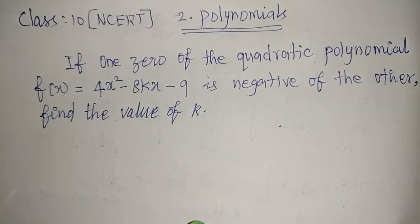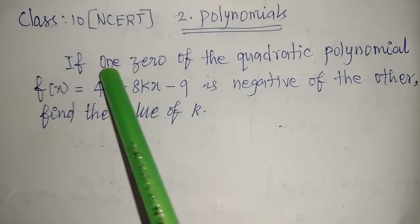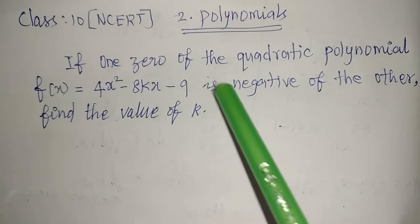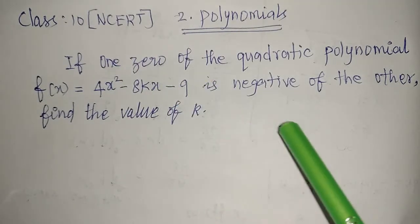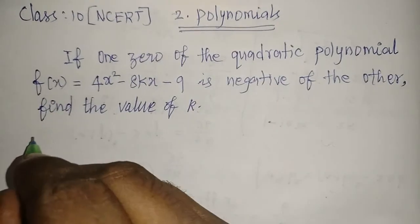One is alpha, another one is beta. Here, if you take one zero, the other one is negative. They're telling if this is the given condition, then we need to find the value of k.